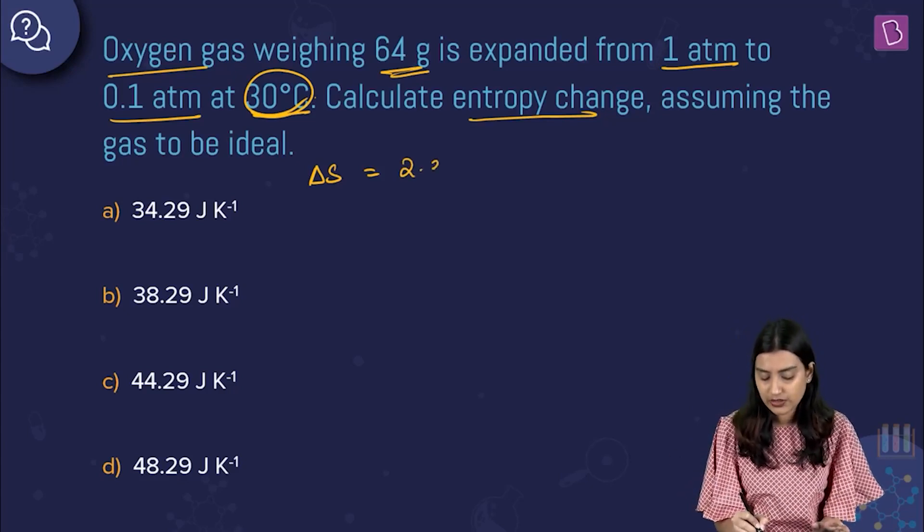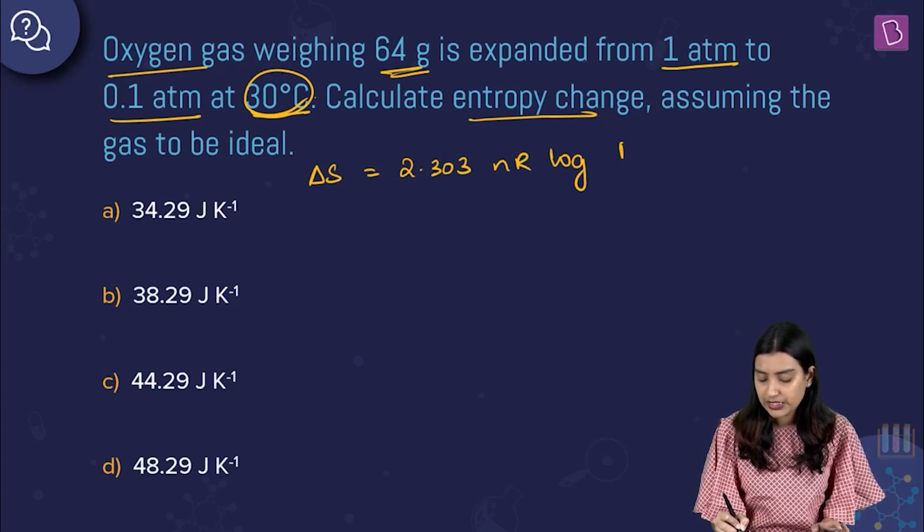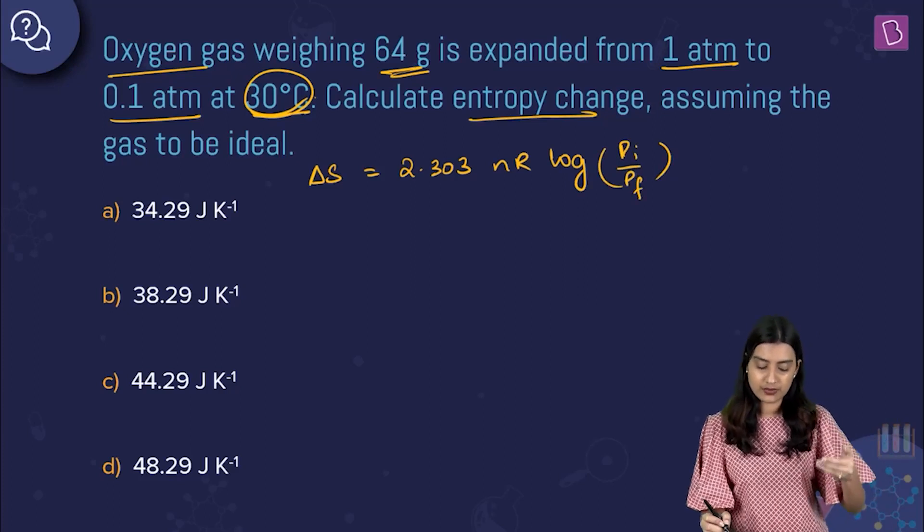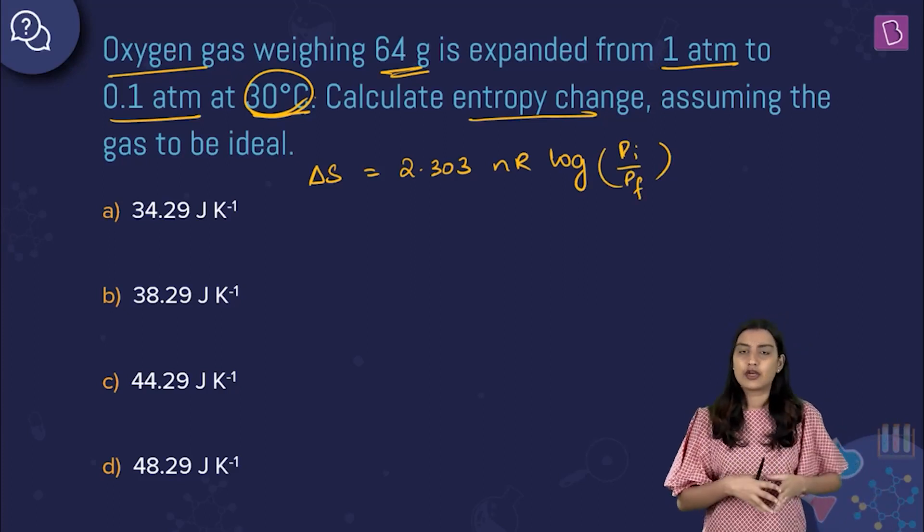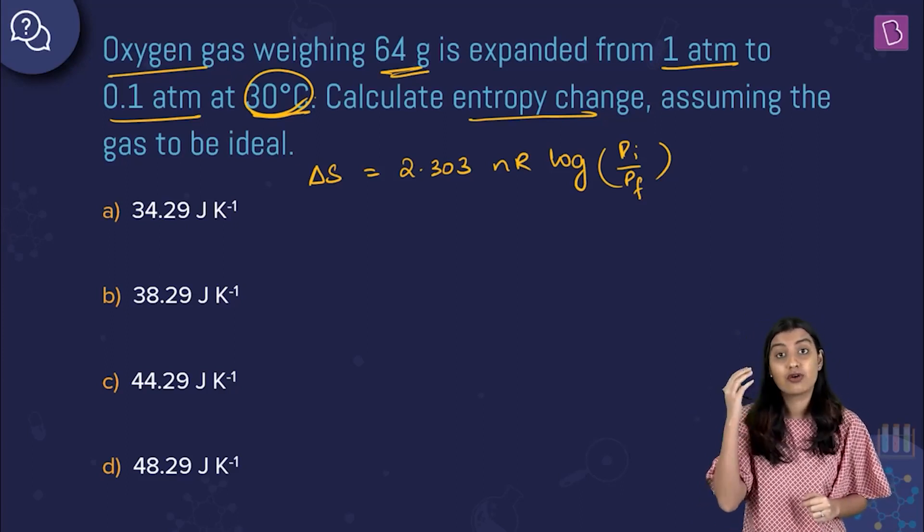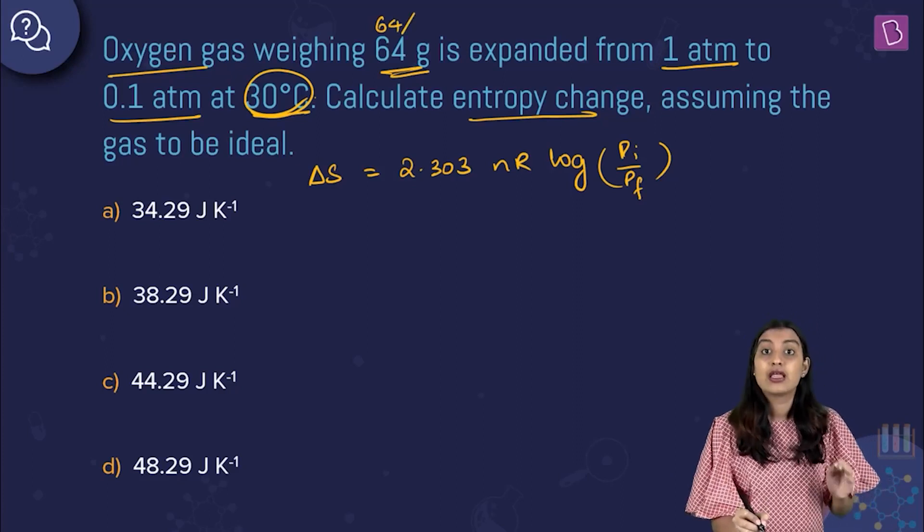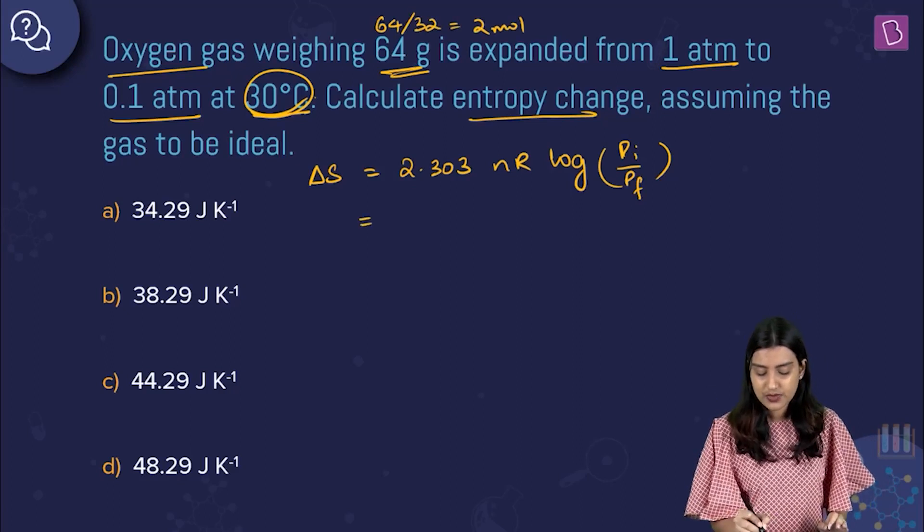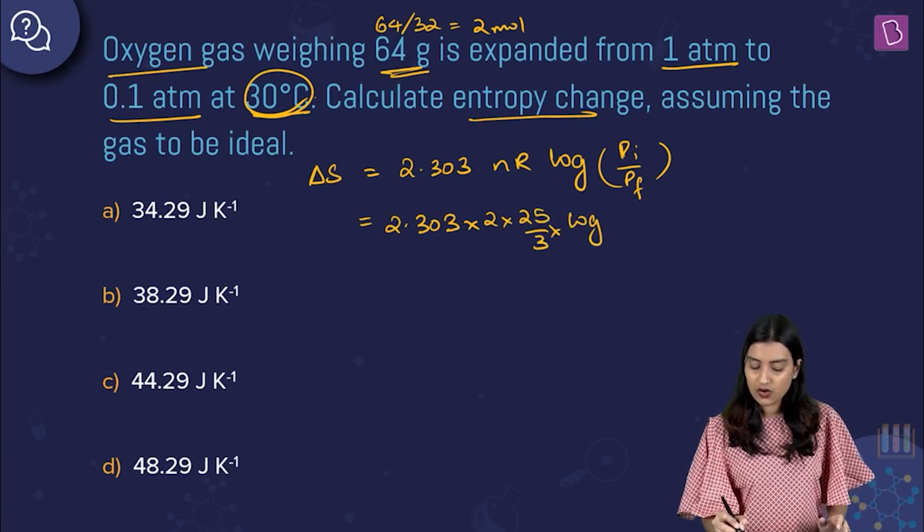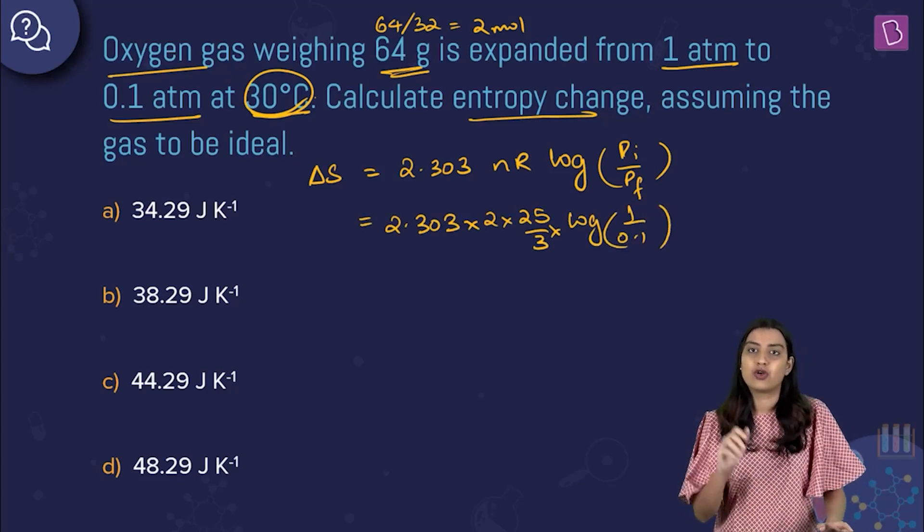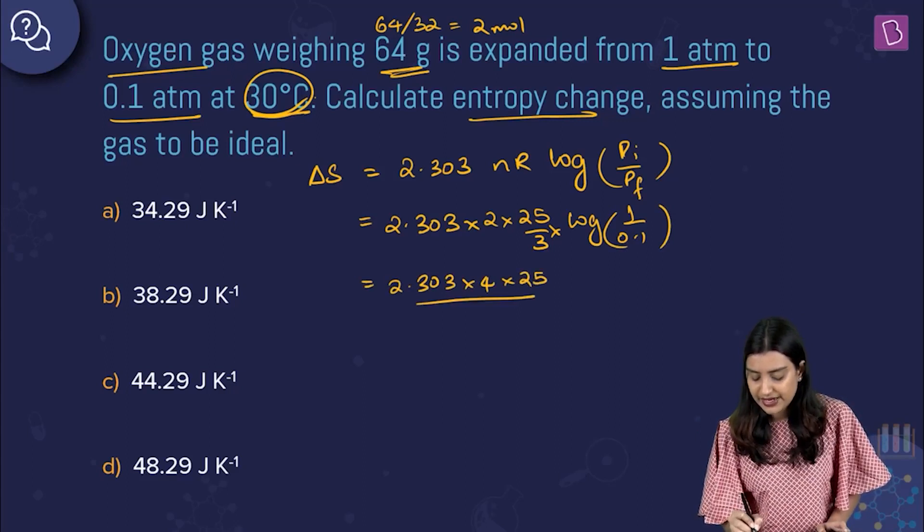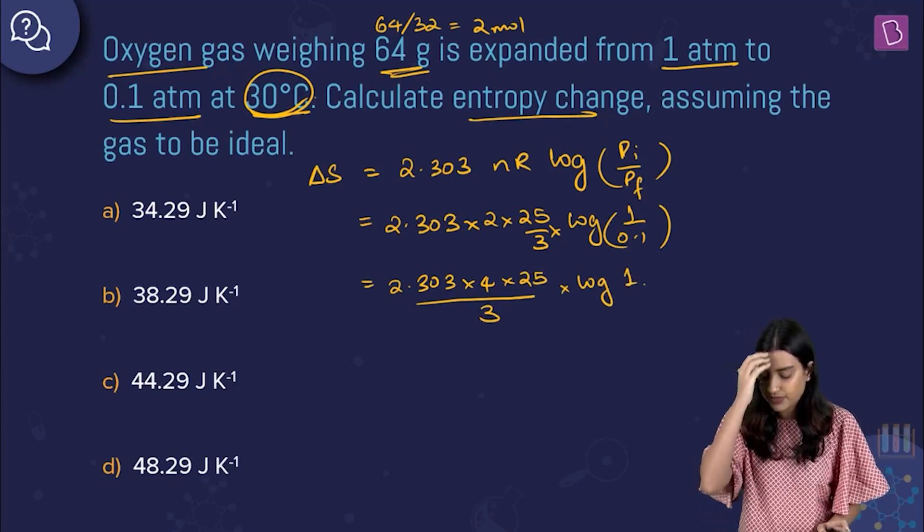How do you calculate delta S? You can write 2.303 nR log of P initial by P final. Your P initial is 1 atm, P final is 0.1 atm. R you know in terms of joules because your options require you to write it in terms of joules. So R we can write it as 8.314. n is going to be how many moles? You have 64 grams of oxygen gas, so you have 64 divided by 32 which means you have 2 moles of oxygen gas. This is 2.303 into 2 into 25 by 3 multiplied by log of 1 by 0.1. Log of 1 by 0.1 is going to be log of 10, which is 1.